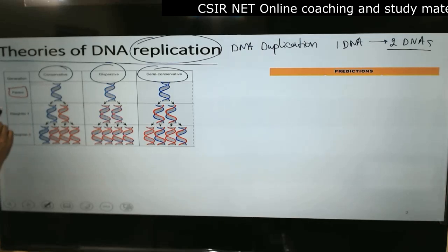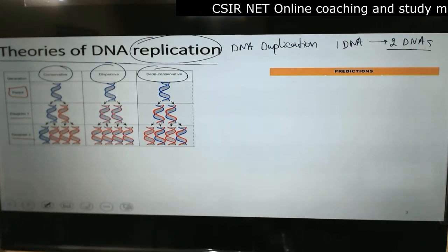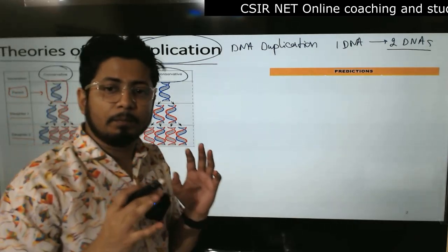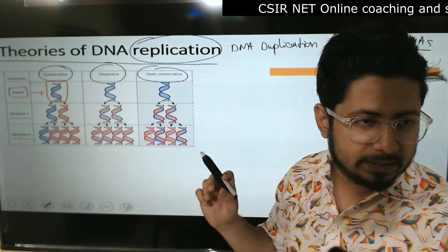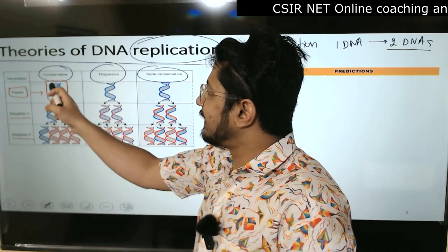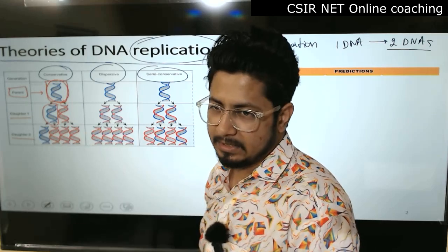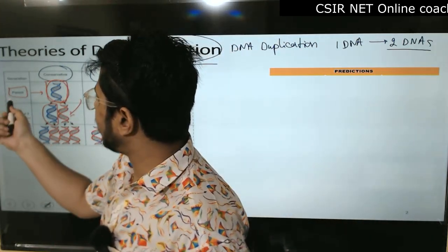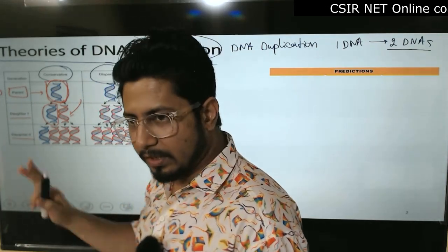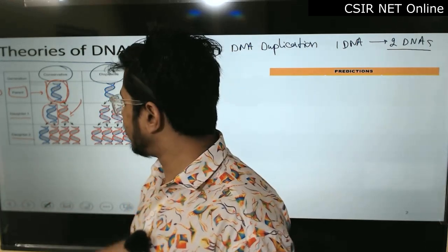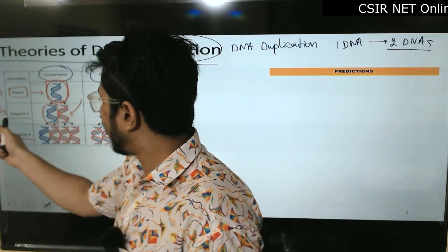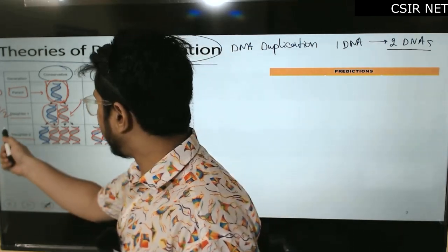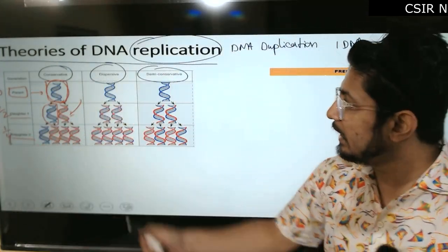We have different generations: parent, daughter generation one, and daughter generation two. In the conservative model, parental DNA strands are shown in blue and new strands in red. Both strands of parental DNA are kept as-is, and a completely new two-strand DNA is produced. In daughter one, we get half old and half new. In daughter two, 75% new — one-fourth old.